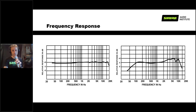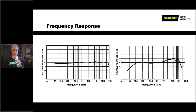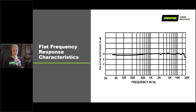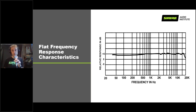Frequency response is essentially how the microphone sounds, and you can plot it on a graph. The horizontal axis shows the range of human hearing — 20 Hz on the low end to 20,000 Hz on the high end — and the vertical axis shows the measured output level at different frequencies. Flat frequency response, where the output is equal at all frequencies, is characteristic of a condenser microphone like a Shure SM81. What you put in is essentially what you get out.